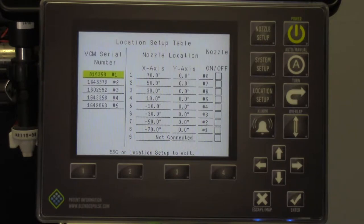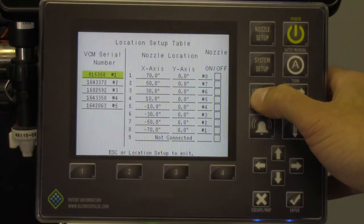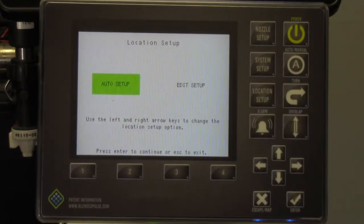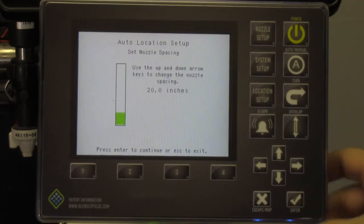Once on this screen, you can press and hold the location setup key for about 10 seconds. Be aware the screen will flash and then stop on an auto setup and edit setup screen. You will want to choose auto setup and it will bring you to the nozzle spacing screen.